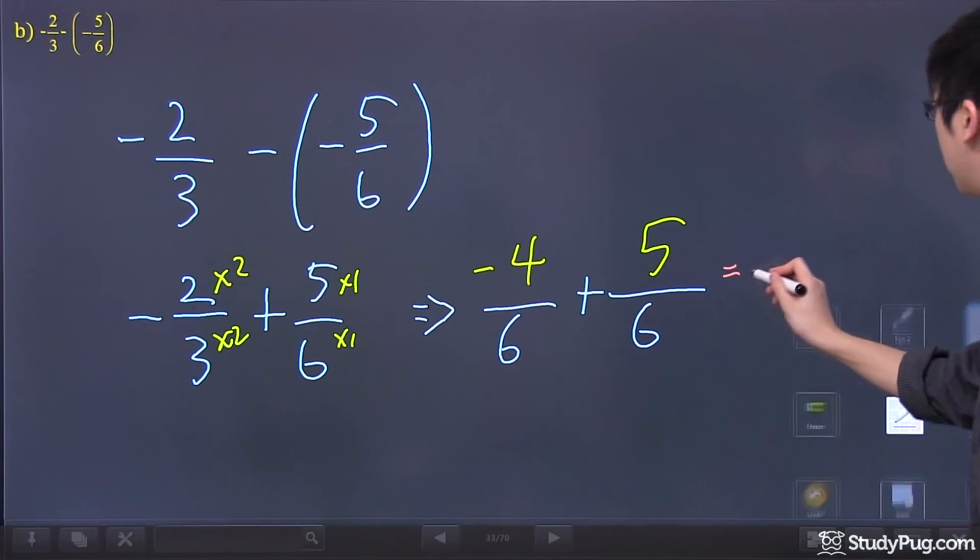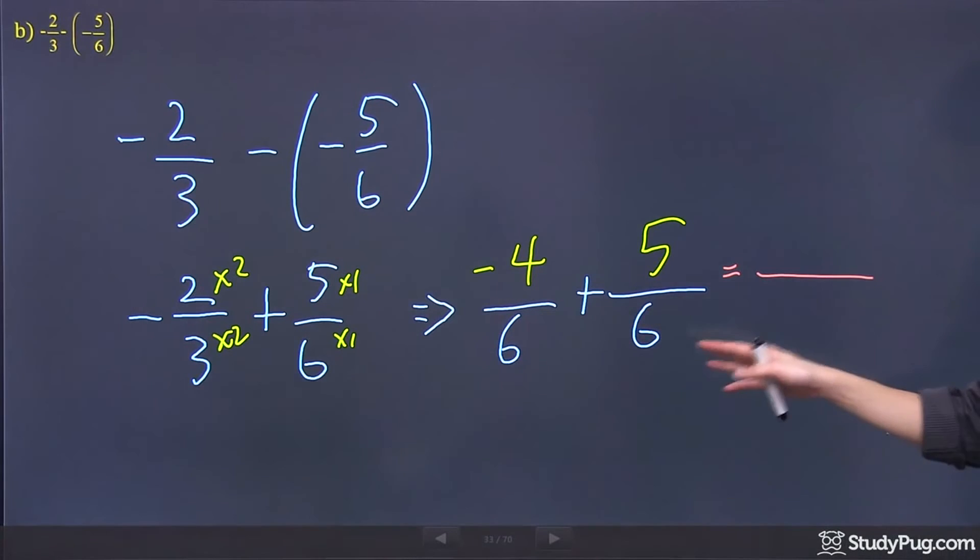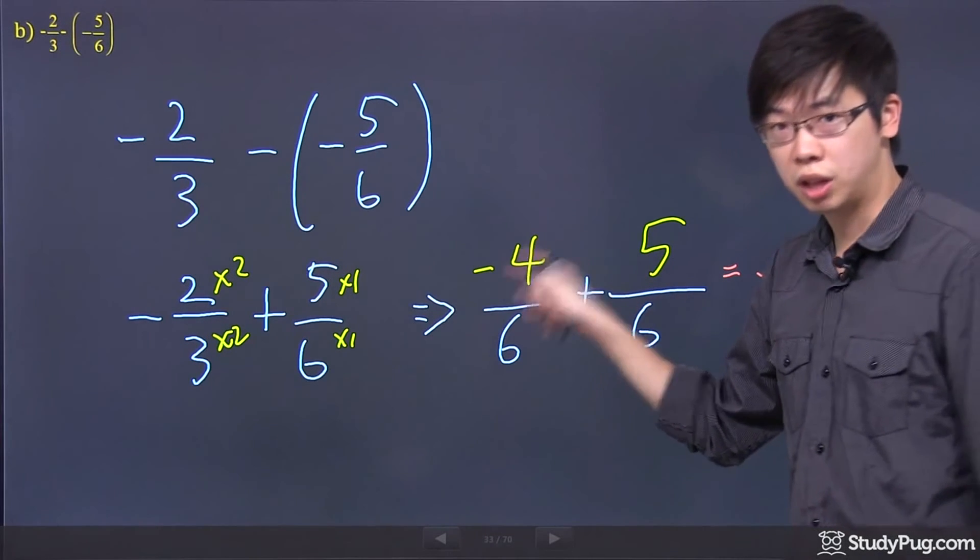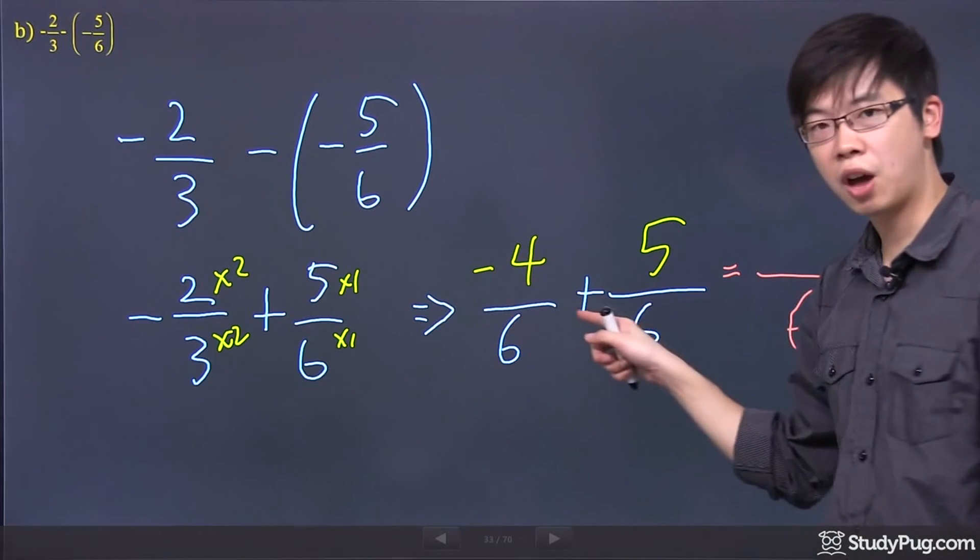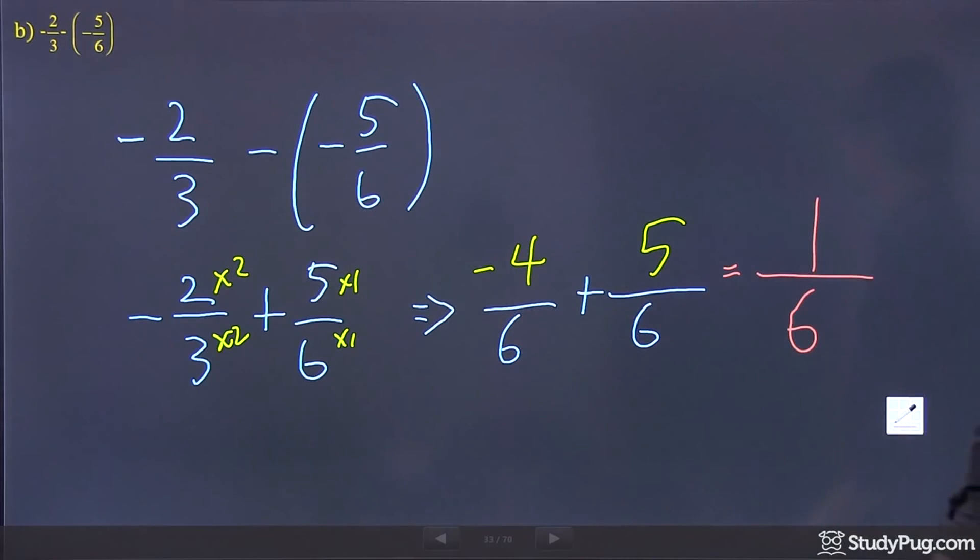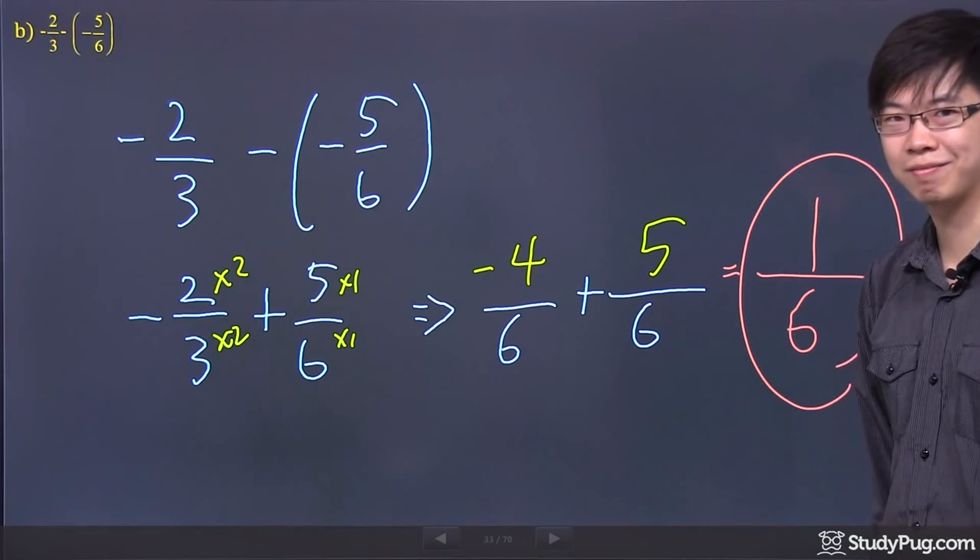So your final answer for this question turns out to be, again, keep the denominator the same. Don't change your denominator, but you would take the negative 4, add a 5, and that leaves you just a 1. So there is your final answer, which is 1 over 6, okay? Thanks for watchin'.